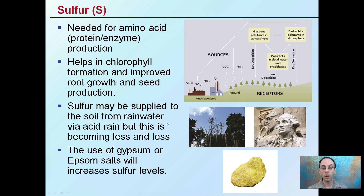Sulfur may be applied to soil from rainwater via acid rain; however, this is becoming less and less over time. As we're cleaning up acid rain — which is a great thing because it's been degrading forests and eroding monuments — that acid rain was supplying some sulfur. So growers may now need to add sulfur products to supplement what's no longer coming from rainwater.